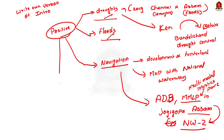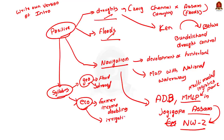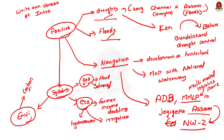For other positives, use the syllabus method to generate points. Under economy, write about the positive impact on agriculture — increased irrigation potential helping achieve the doubling of farmer income. Also write about the potential of interlinking to increase hydroelectric power generation. Under environment, write about how generating hydropower will help reduce the carbon footprint, linking to COP26 where India committed to achieve net zero by 2070.